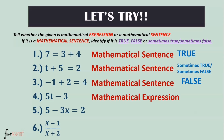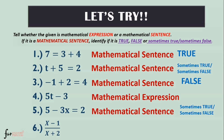Number four: '5p − 3.' This is a mathematical expression, so we do not need to identify it as true, false, or sometimes true/sometimes false. Number five: '5 − 3x = 2.' This is a mathematical sentence, and it is sometimes true, sometimes false because we don't know the value of x. Number six: '(x − 1) ÷ (x + 2).' This is a mathematical expression. That's how we identify mathematical sentences and mathematical expressions.